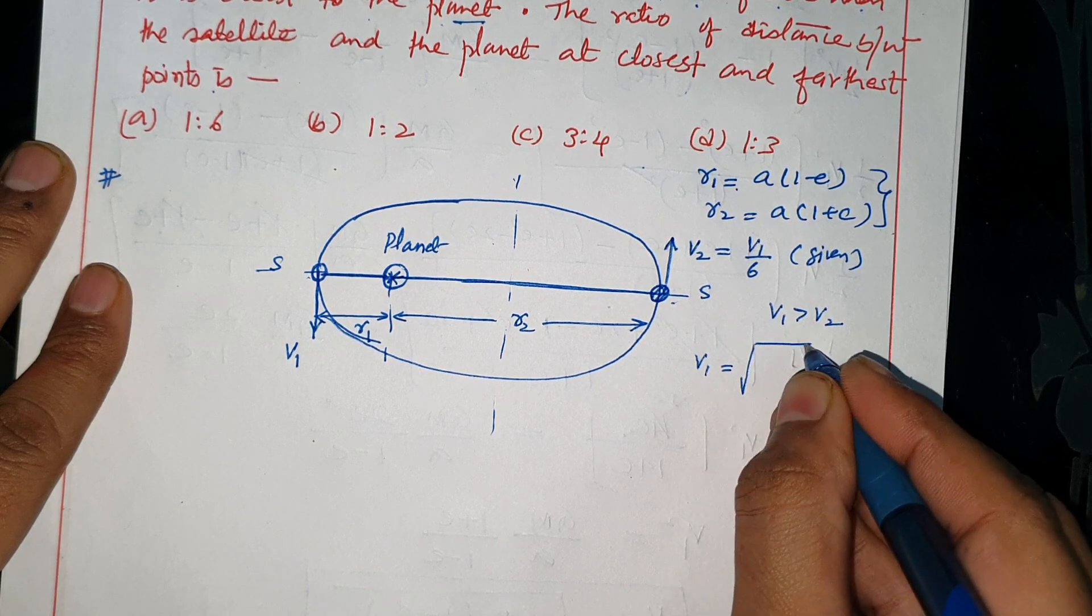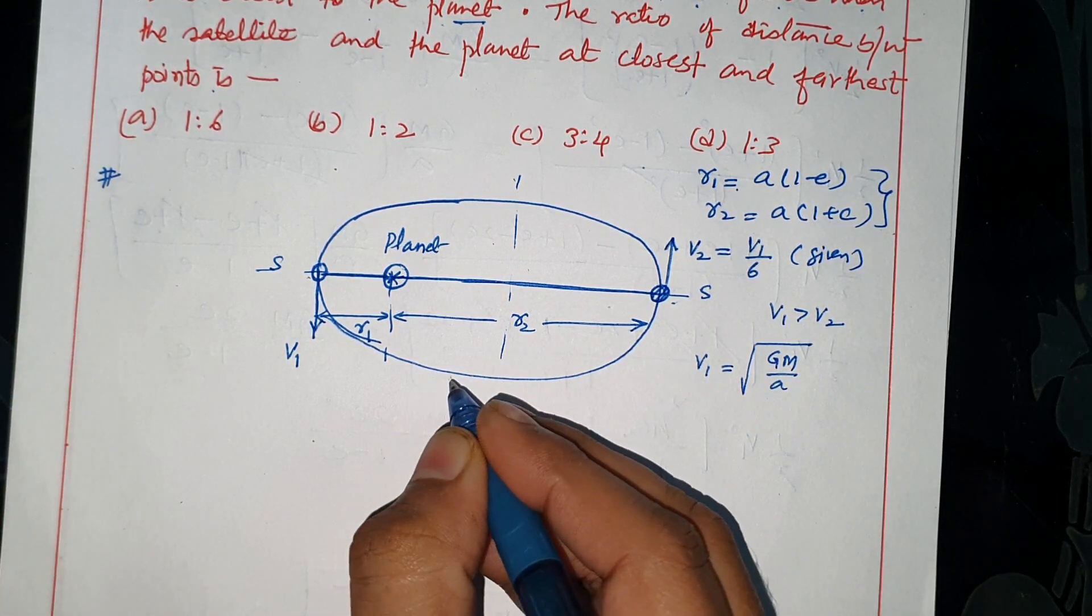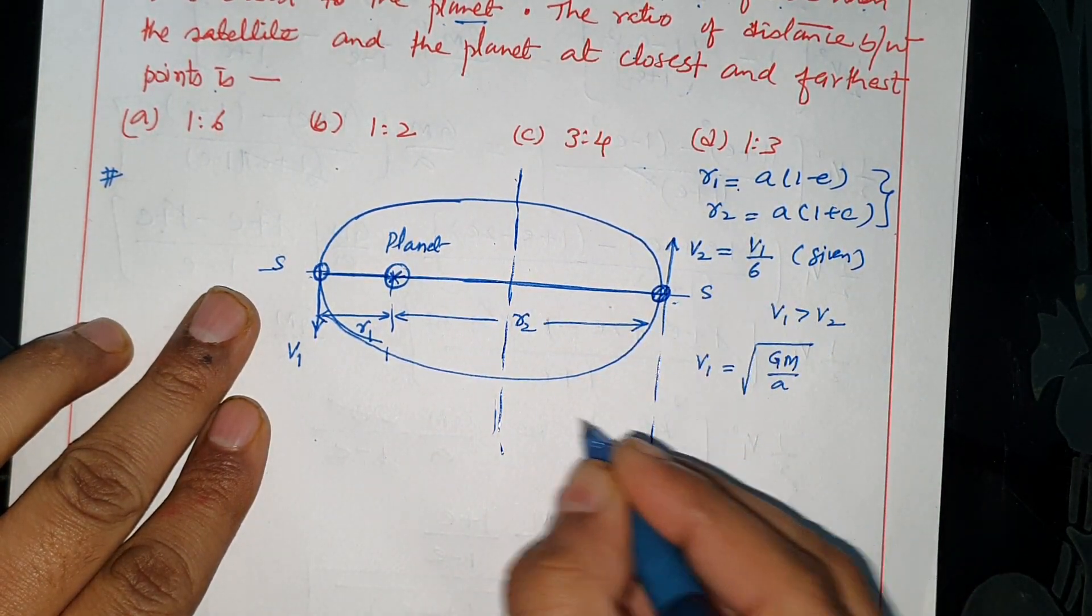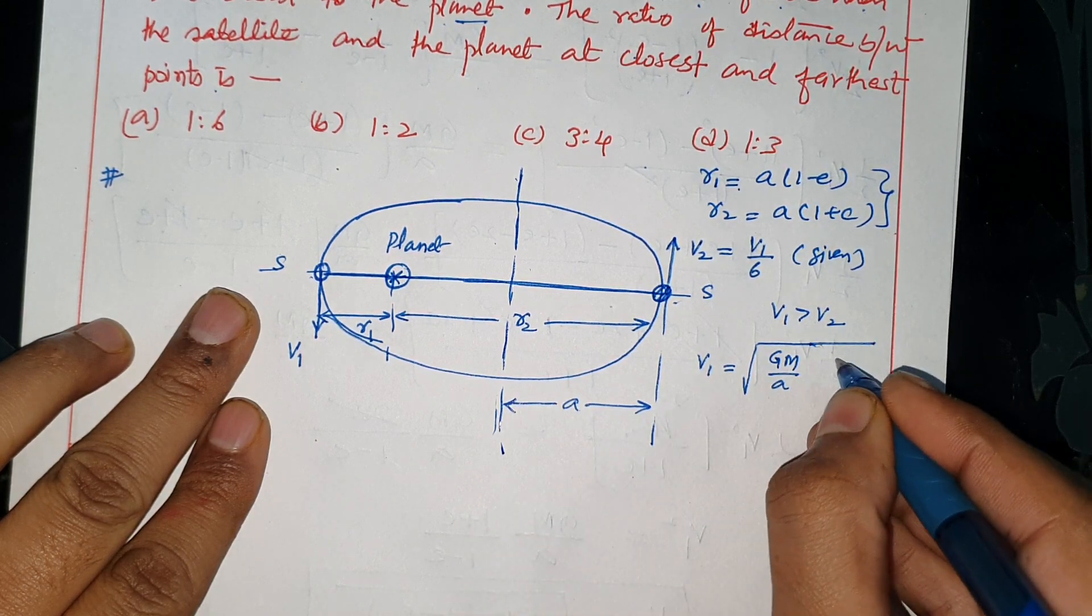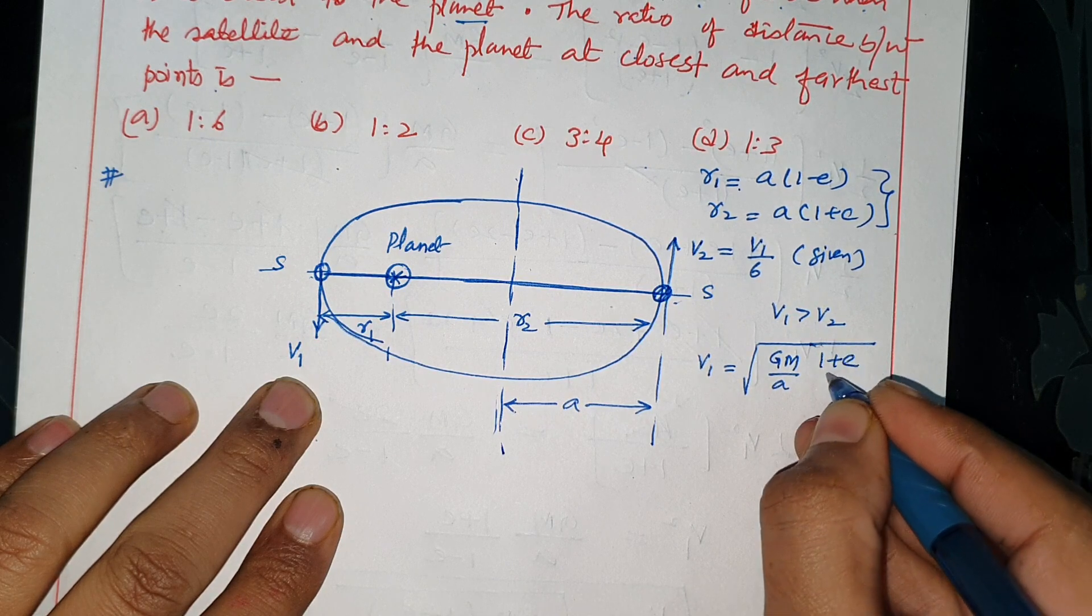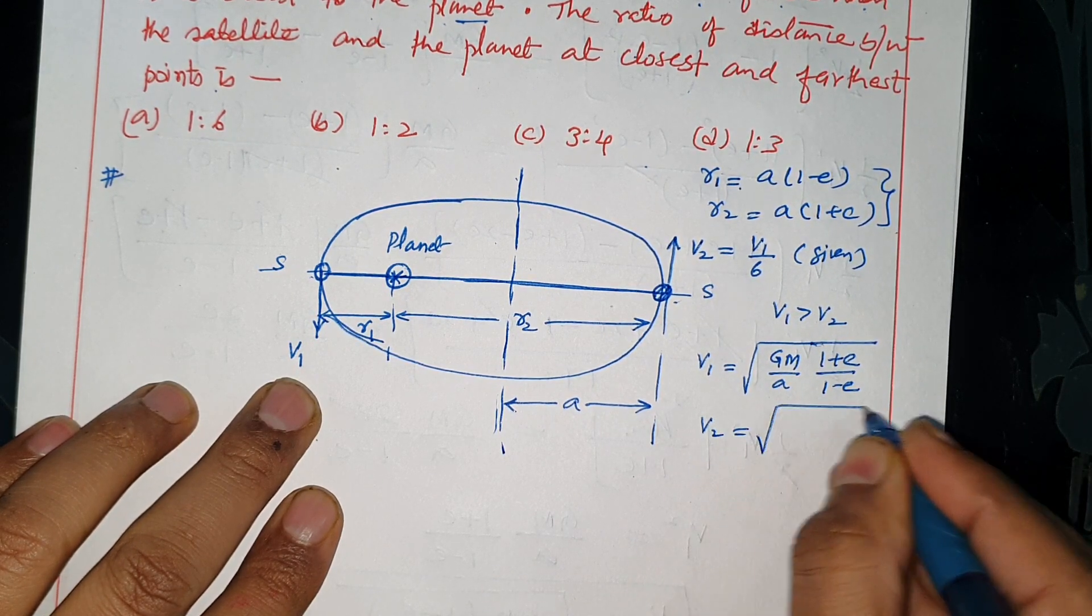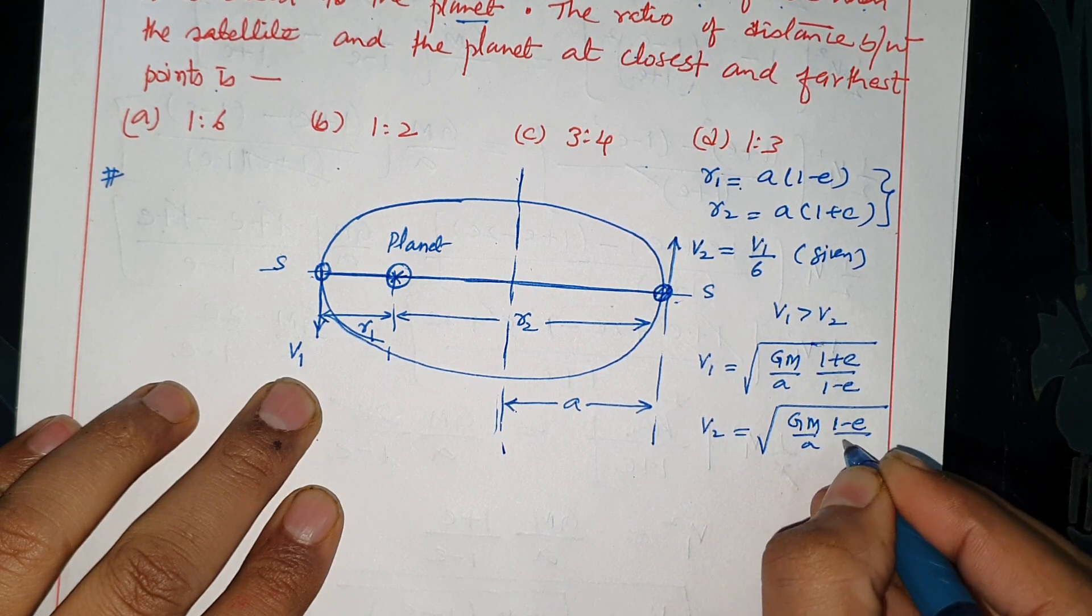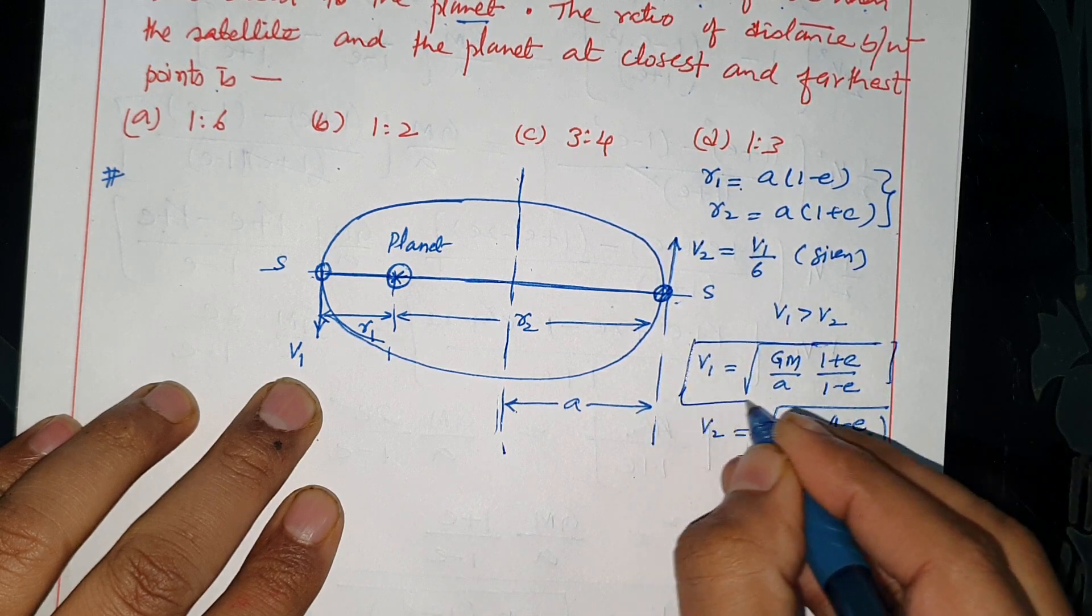If you remember, V1 equals root GM on A, semi-major axis, 1 plus e maximum, 1 minus e. And V2 equals root GM by A times 1 minus e by 1 plus e. If we remember this, V1 is more than V2.